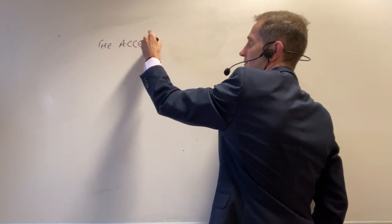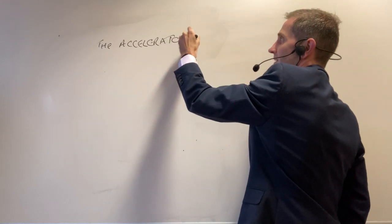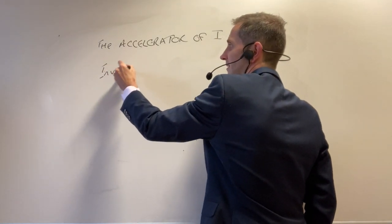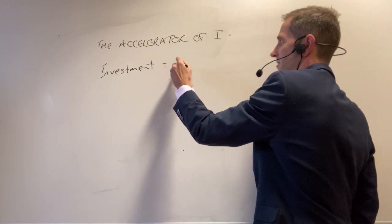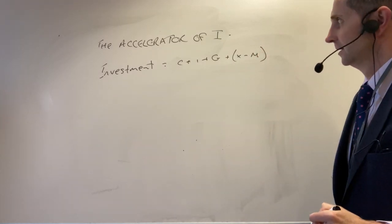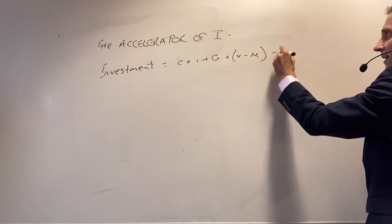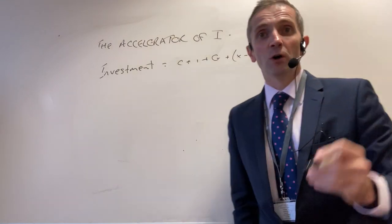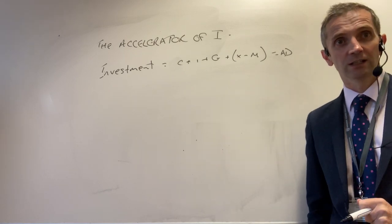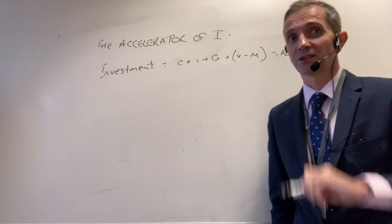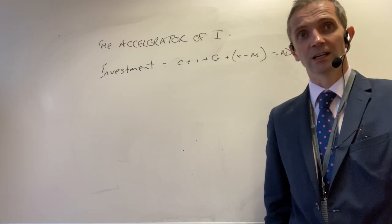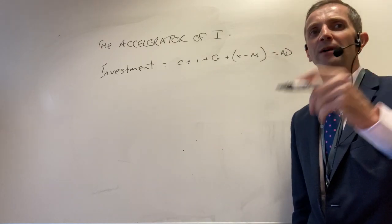So it's the accelerator theory of investment. We know that investment is a component of AD — C + I + G + (X − M) = AD. We've also established that not only does investment increase AD, but it will also shift supply, leading to sustainable and long-run economic growth, where you can grow your national income Y without creating inflationary pressures. So investment clearly impacts both AD and AS.